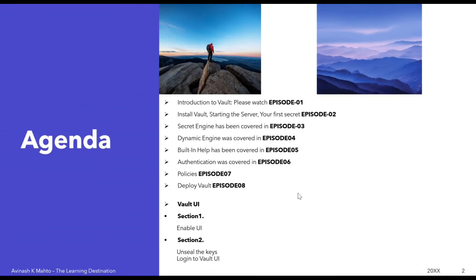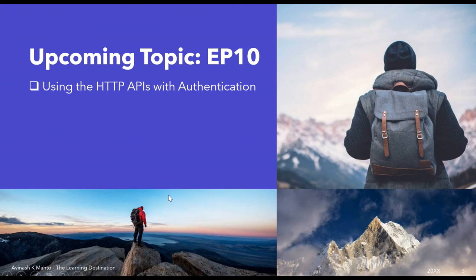Let's quickly recap what we have done. We enabled the user interface inside the configuration file with 'ui = true', which allows us to access the Vault server in UI mode. In the second section we defined the key shares value and the threshold value. Finally, we downloaded the keys and used them to unseal our Vault server, and we logged in to the web-based UI interface of the Vault server.